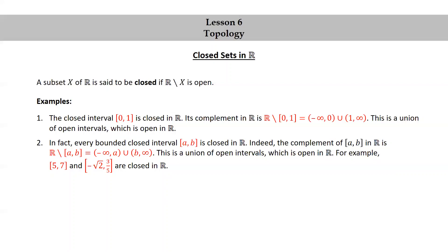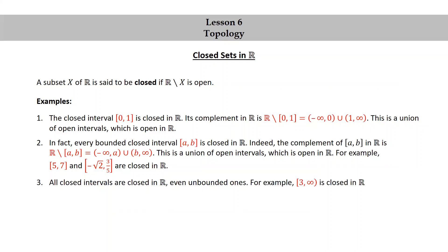For example, the closed interval [5,7] and the closed interval [-√2, 3/5] are closed in R. All closed intervals are closed in R, even unbounded ones. For example, the infinite closed interval [3, ∞) is closed in R because R minus [3, ∞) equals the infinite open interval (-∞, 3), which is open in R.